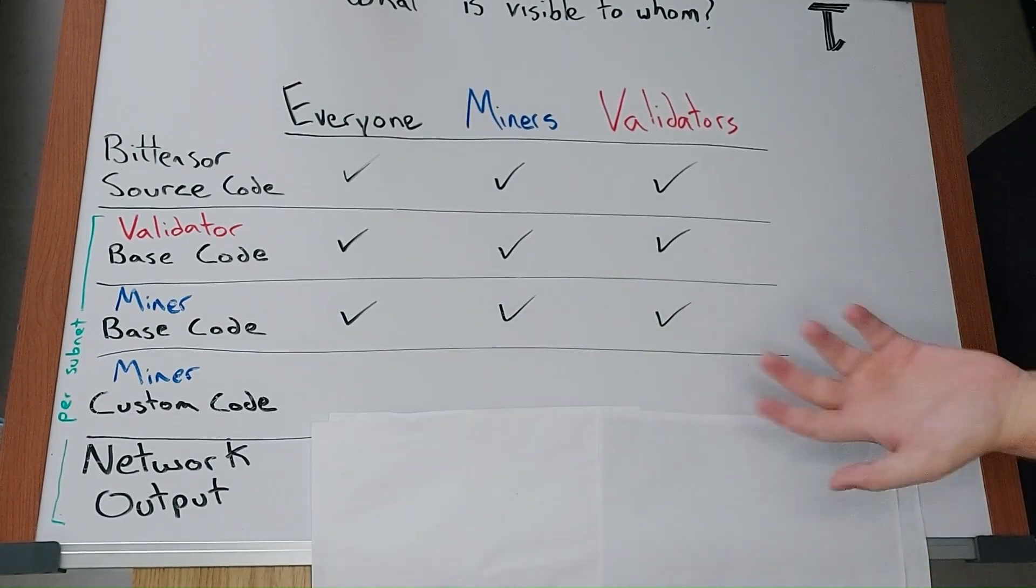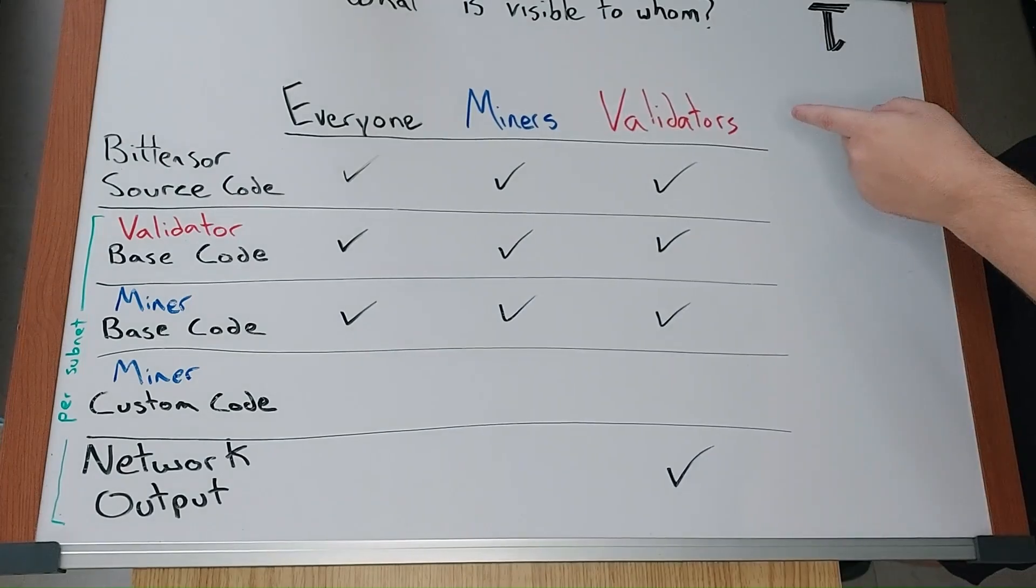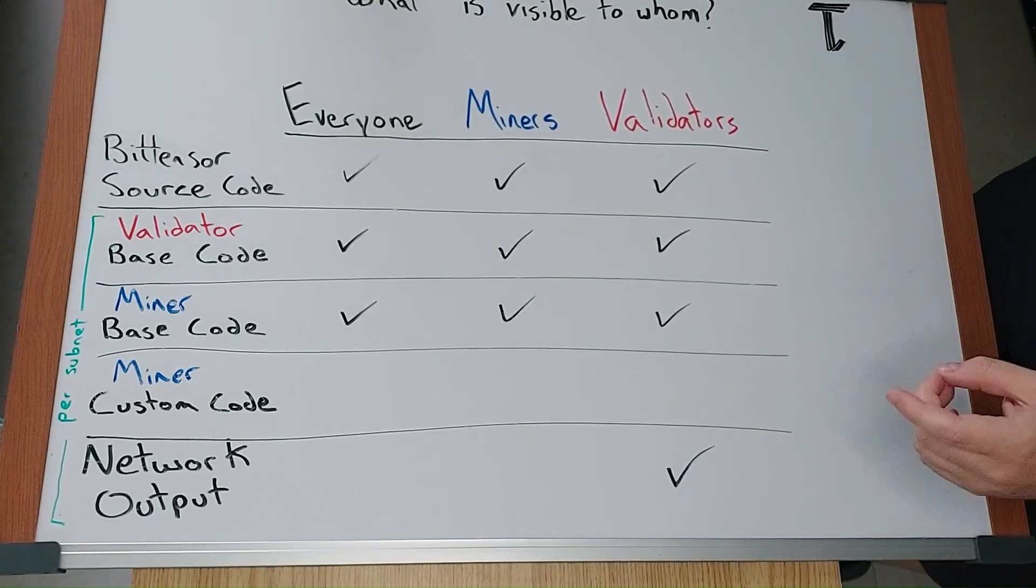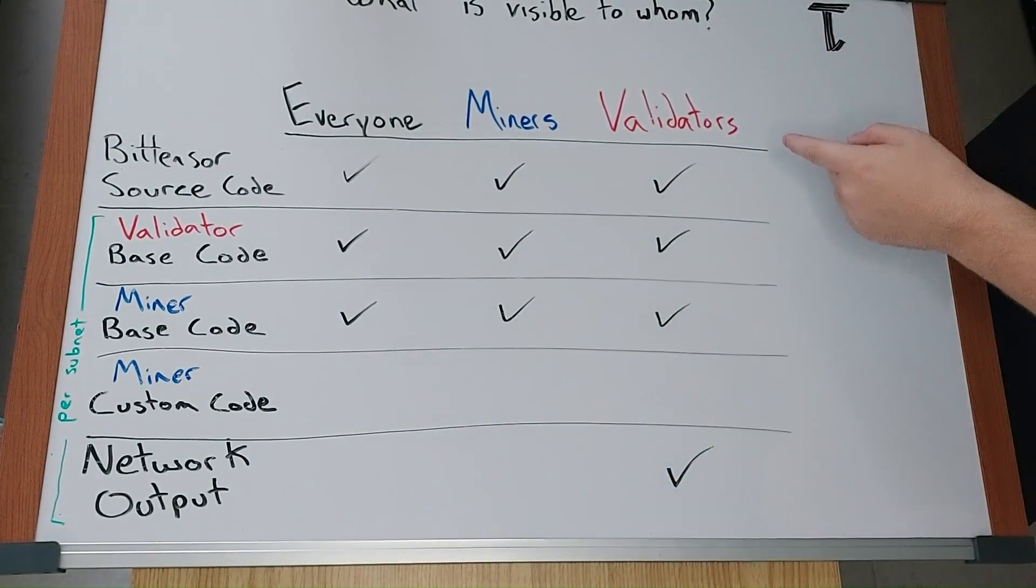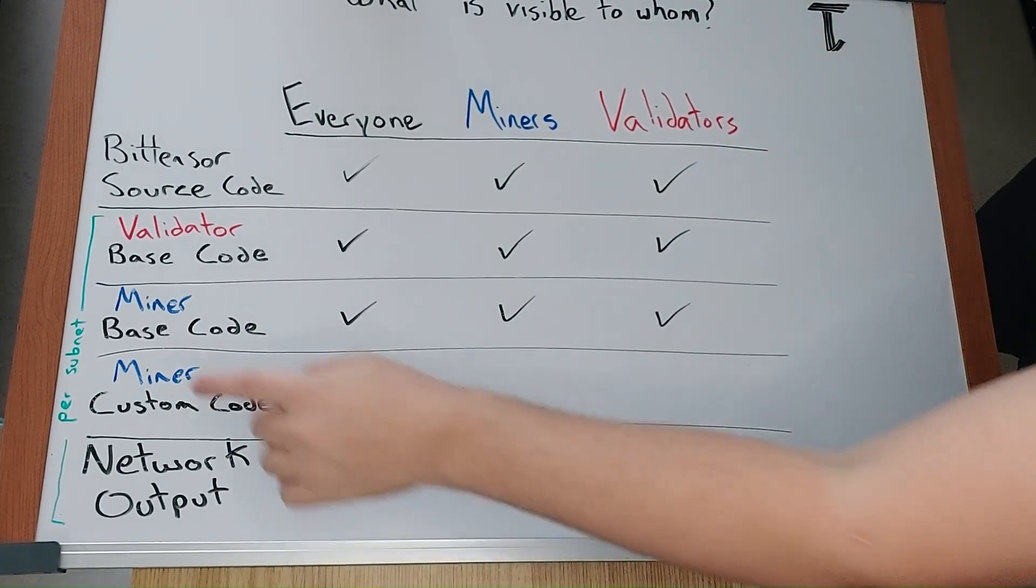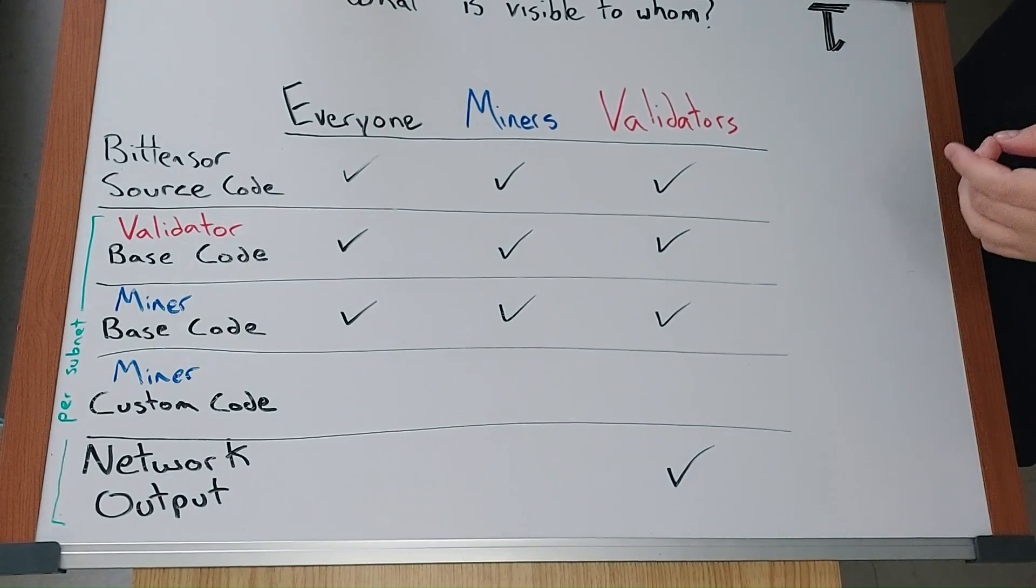Network output, meaning miner output. Validators are the only ones that can see the work that miners produce. Validators can see all network output from all subnets as long as they have enough TAO.